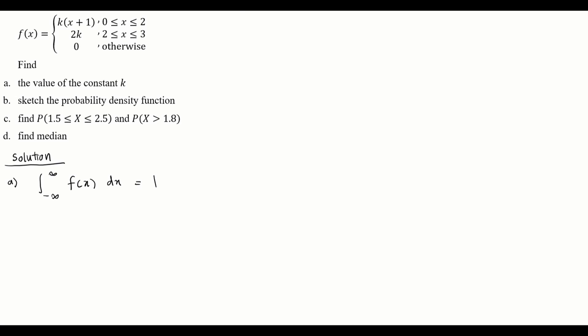First we draw a number line. The intervals involved in this function are between 0 and 2, and between 2 and 3. Between 0 and 2 the function is k(x+1), between 2 and 3 the function is 2k, and otherwise it is 0. We want to integrate from negative infinity to infinity.